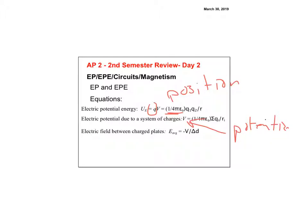We have KQQ/R for electrical potential energy and KQ/R for electrical potential — both have R on the bottom. Remember forces and E-fields had R-squared. That's because these quantities are scalars, so you worry about positive or negative, but not about the angle.